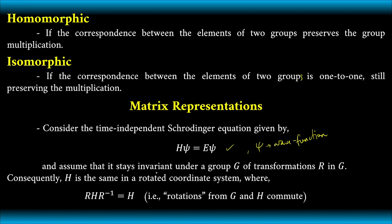it stays invariant under a group G of transformations R in G. When we say that this is invariant, it means that even if we apply some transformations for this operation, or we operate some matrix transformations or matrices, we can say that this still is unchanged. So, consequently, each is the same in a rotated coordinate system because, of course, it's invariant.